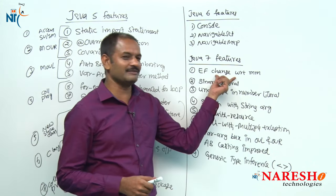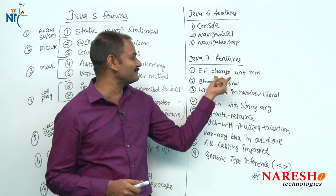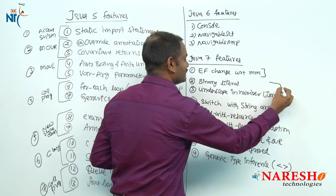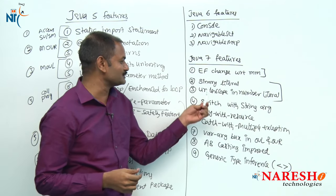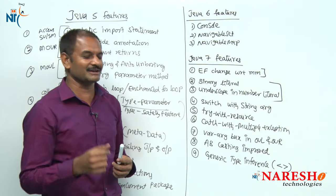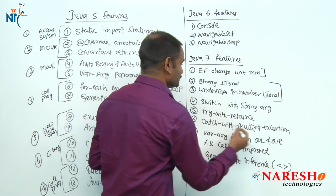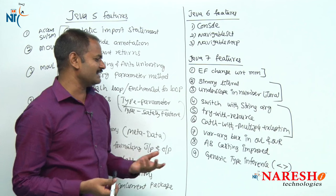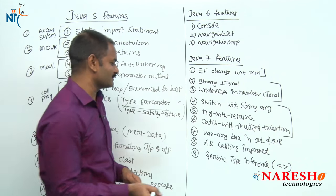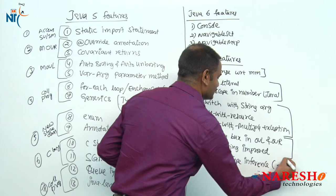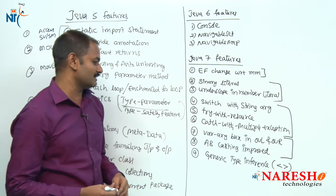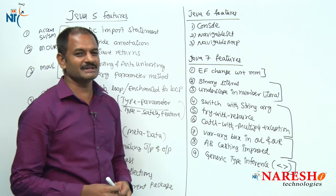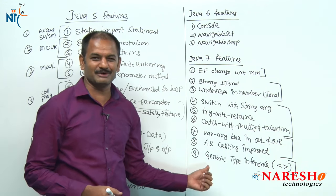If you remember the chapter names, you can remember the internals easily. First chapter: Java program execution flow — main method change. Second: data types — binary literals and underscore in literals. Third: operators and control flow statements — switch with String, try-with-resources, multi-catch. Fourth: methods — varargs and auto-boxing improvements. Fifth: generics — type inference with diamond symbol. I hope you got the clue about how to remember all these things.